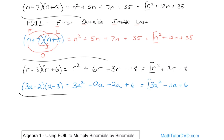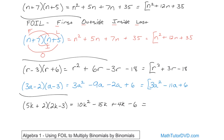One more for practice: (5k + 2)(2k − 3). The first terms: 5k times 2k is 10k squared. The outside terms: 5k times negative 3 gives you negative 15k. The inside terms: 2 times 2k gives you 4k. The last terms: 2 times negative 3 is negative 6. Combining like terms, negative 15 plus 4 gives negative 11k, so the final answer is 10k squared minus 11k minus 6.